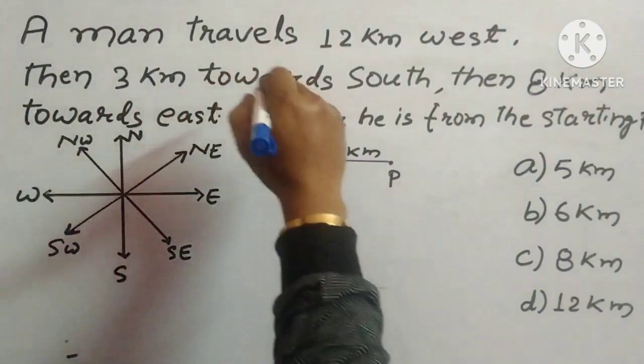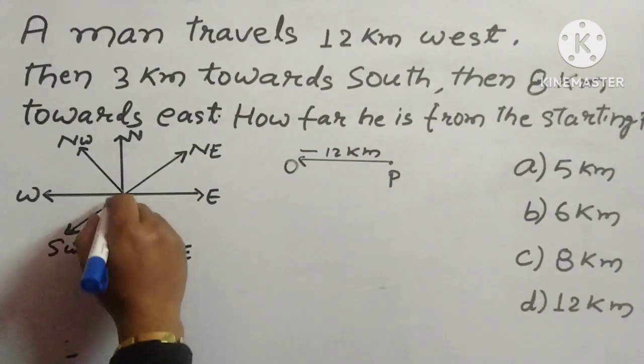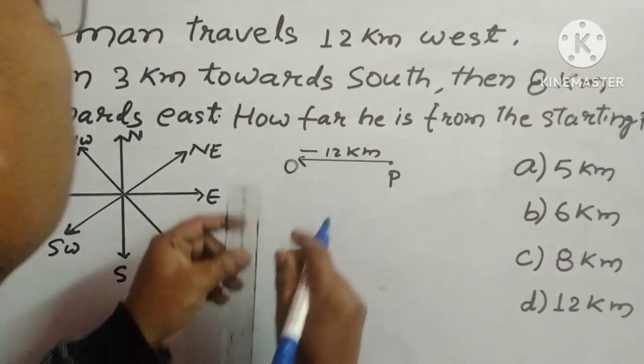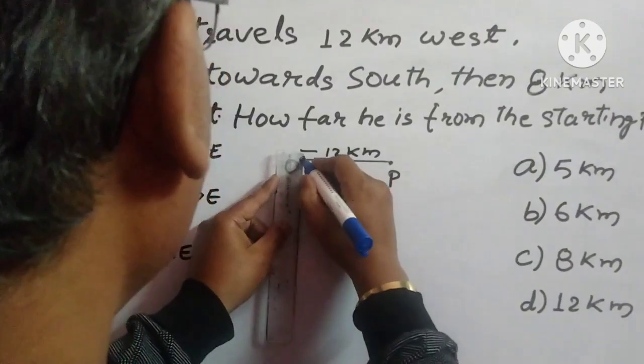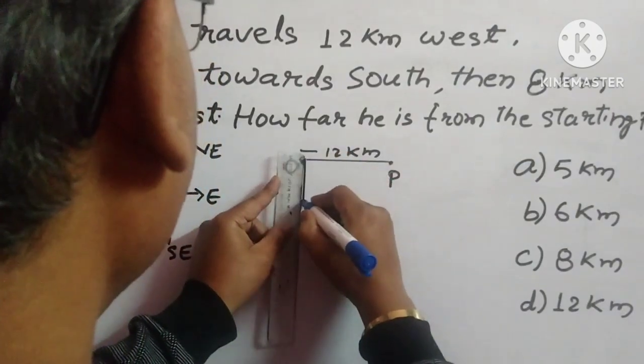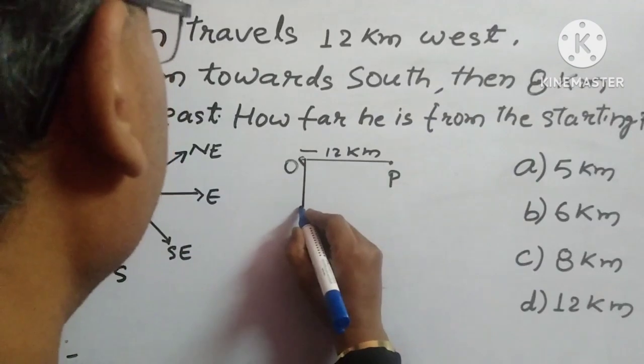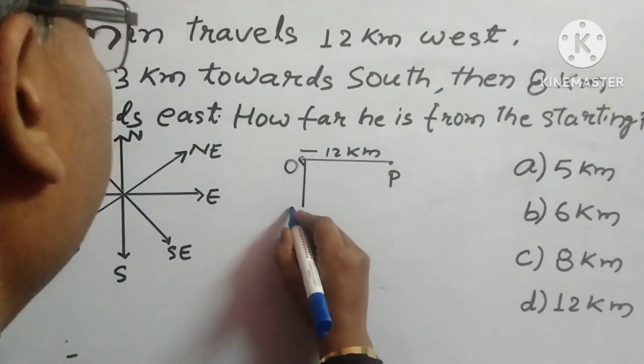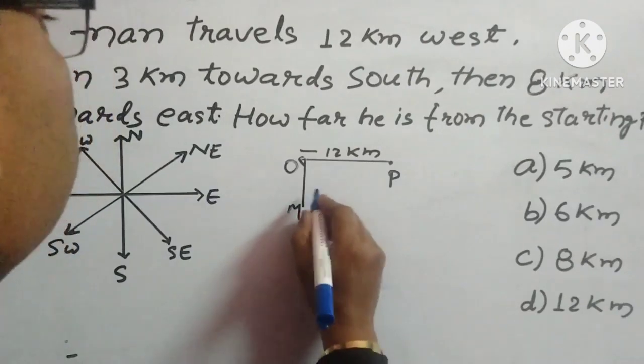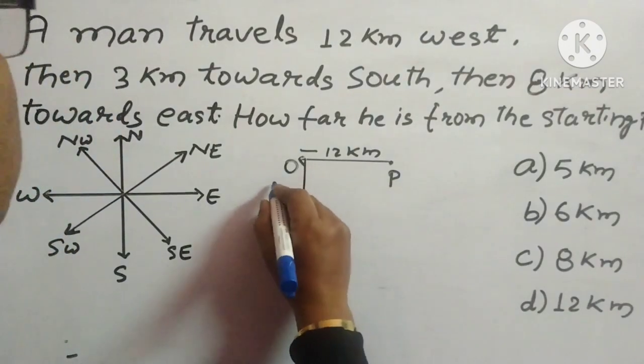Now then 3 km towards South. South is this direction. So 3 km South, we will draw here like this. Give it a name M, so this is 3 km.